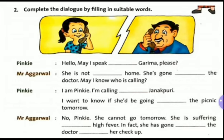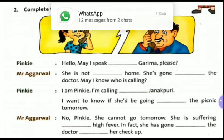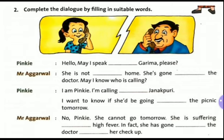Now the second part: complete the dialogue by filling in suitable words. Pinky: Hello, may I speak to Garima please? 'To' will go in the first blank. Mr. Agrawal: She is not at home — 'at' will be in the second blank. She has gone to the doctor. May I know who is calling? Pinky: I am Pinky. I am calling from Janakpuri — 'from.' I want to know if she would be going to the picnic tomorrow. Mr. Agrawal: No Pinky, she cannot go tomorrow. She is suffering from high fever. In fact she has gone to the doctor for her check-up. This is how you have to fill up the blanks.